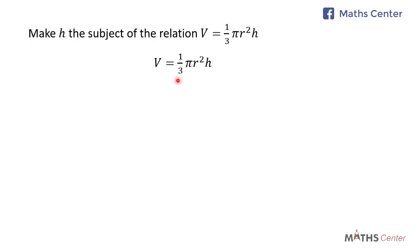This equation involves a fraction, so we will multiply each term by the denominator of the fraction to remove the fraction. The denominator of the fraction is 3, so I'll multiply each term by 3.